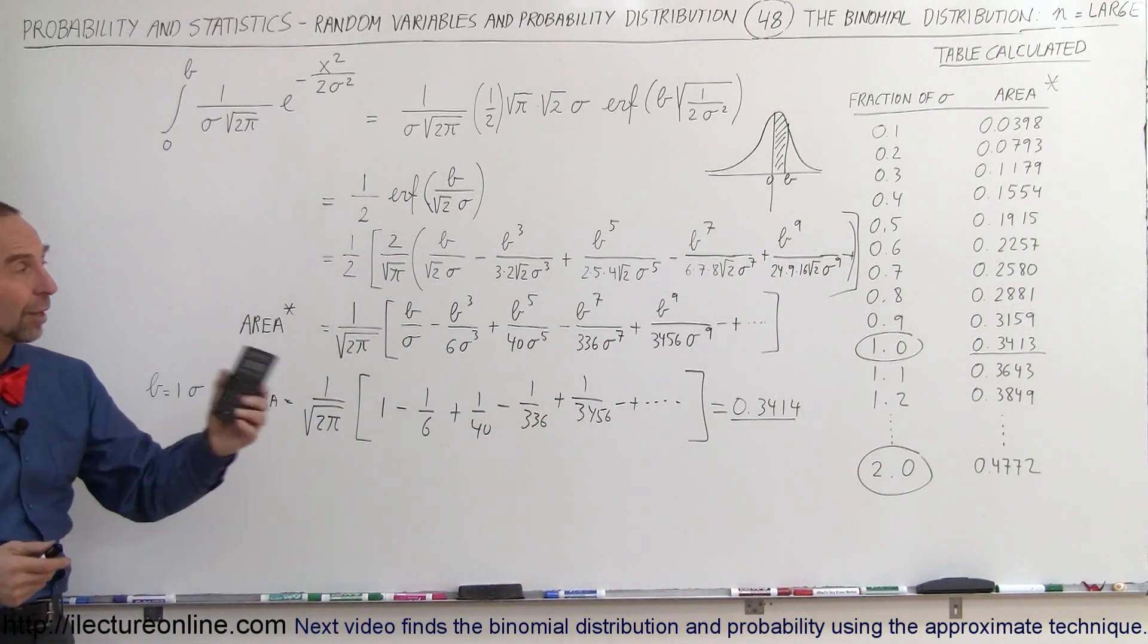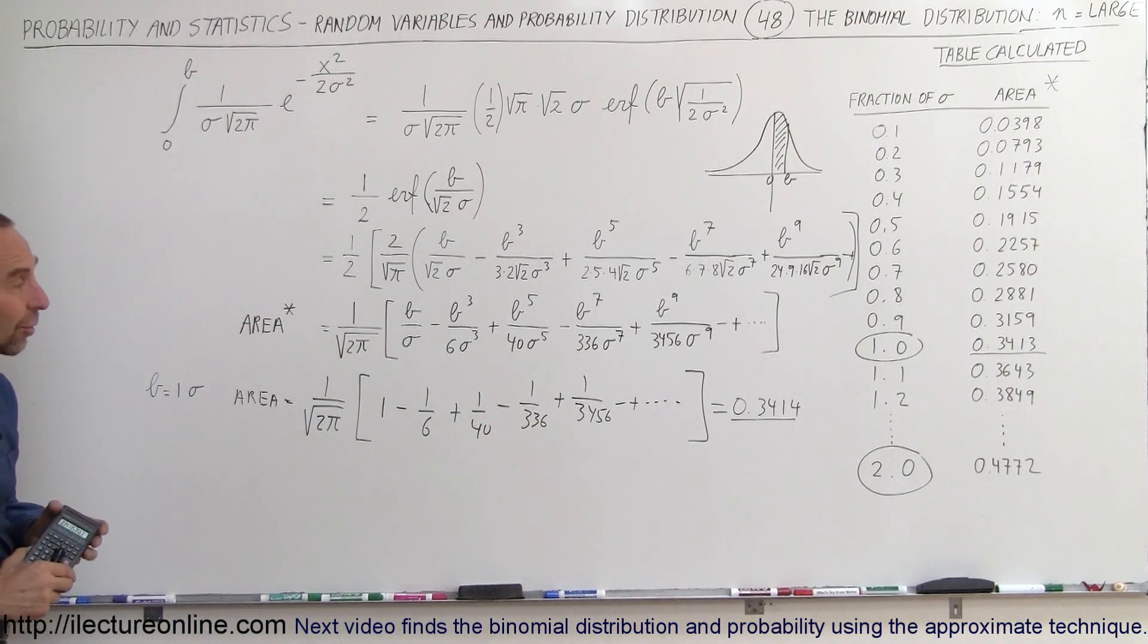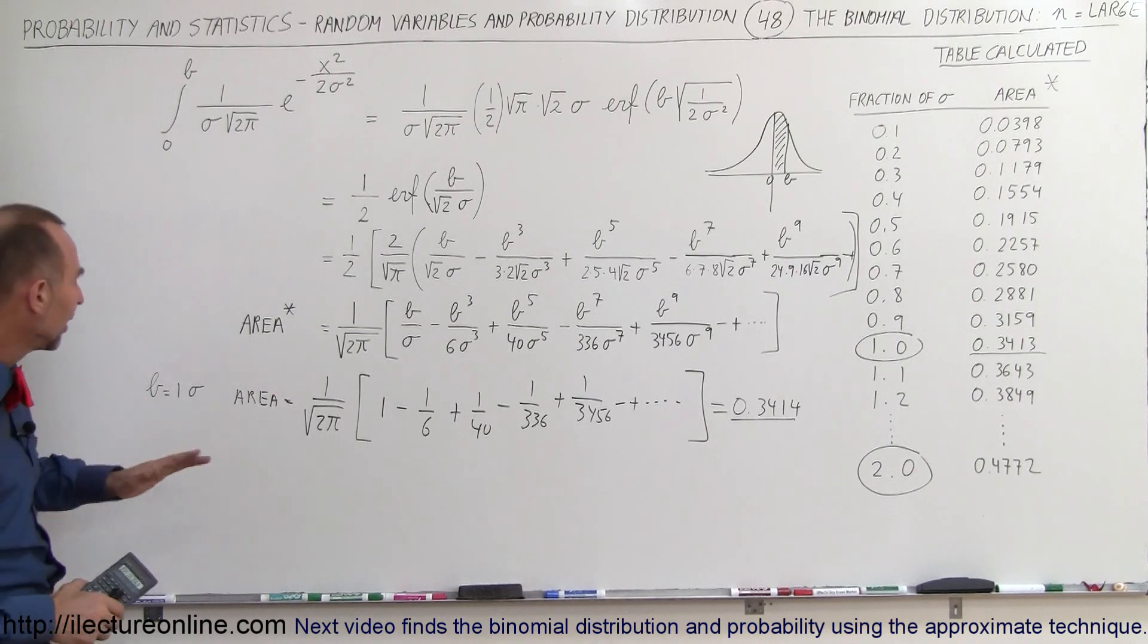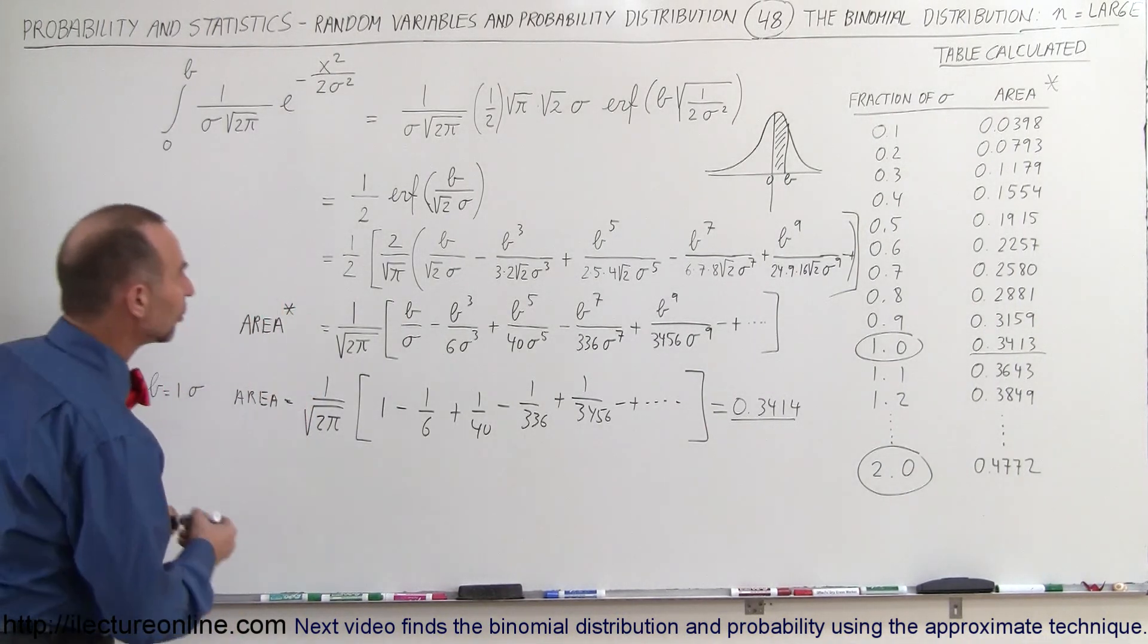Take one or two more terms, and we've gotten that last decimal place correctly as well. So, let's do it one more time, but in this case, we're going to find, let B equal to two sigma.